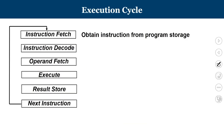A computer's basic task is to execute programs. Let us now take a quick recap on how the execution of a program happens. It consists of various sub-stages, forming what is known as the execution cycle.